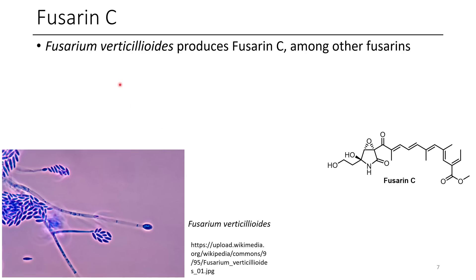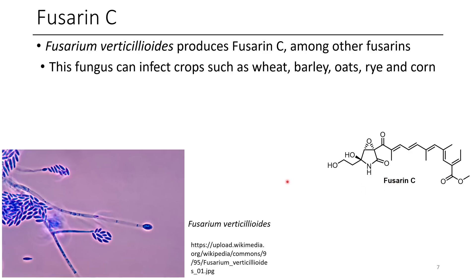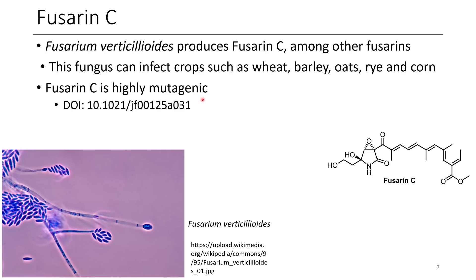The next one is Fusarin C. Here we can see the fungus it comes from, Fusarium verticillioides — apologies if I butchered that. There are a couple other members in the Fusarin family, but Fusarin C is the most toxic and most noteworthy. This can infect crops such as wheat, barley, oats, rye, and corn, and it is highly mutagenic — it causes DNA issues.